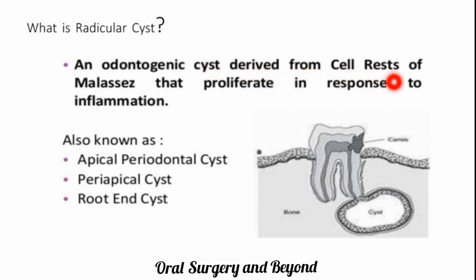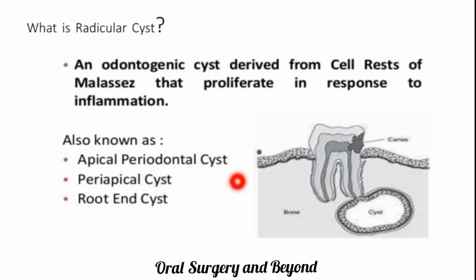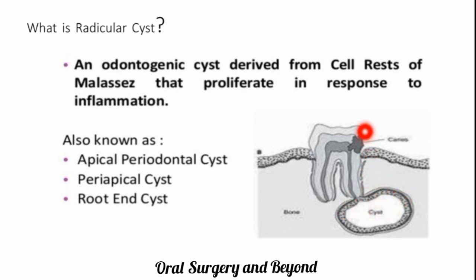What is a radicular cyst? Basically it is an odontogenic cyst derived from the cell rests of Malassez that proliferate in response to inflammation. It is also known as apical periodontal cyst, periapical cyst, and root end cyst. Because of chronic infection to the tooth, the infection goes to the periapical region via pulpal infection and enlarges, forming a cyst.